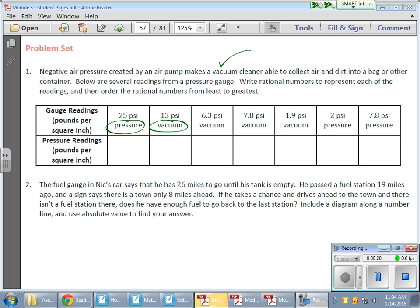For something that's vacuuming, that's a negative situation because we have negative air pressure. That's what makes the dirt go into the vacuum cleaner, so that would be a negative pressure of 13 pounds per square inch.